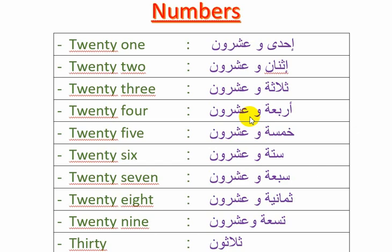As-salamu alaykum. اليوم سنتابع تعلم الأعداد في اللغة الإنجليزية من العدد 21 إلى العدد 30. سنرى الأعداد من العدد 20 إلى العدد 30.